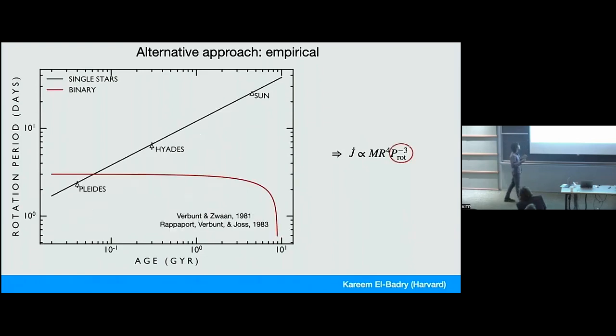That will reproduce this kind of spin down for single stars. And you now put that in a binary, which people have been doing for a long time. I think the paper that made it most popular was this Rappaport et al paper in 1983.